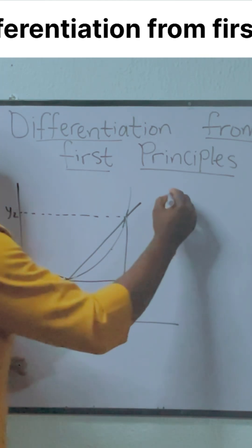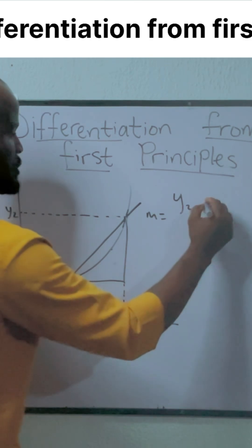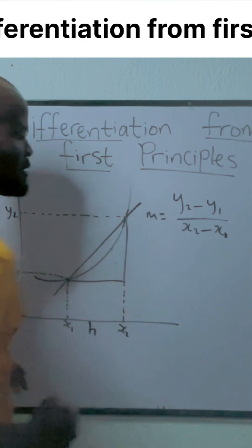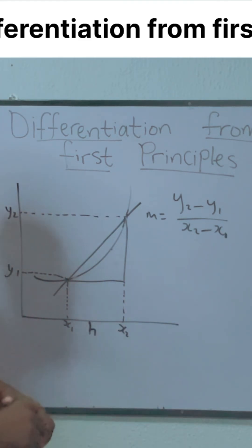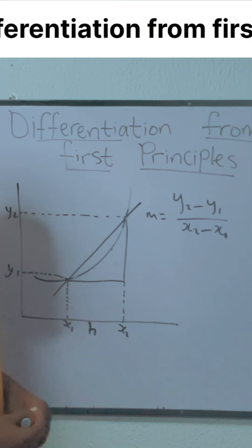Now we know that the slope of this graph is m equals (y2 - y1) over (x2 - x1). But we already know that there is a formula and that formula is what eventually is going to lead us to first principles. We're going to make this formula for the slope look like that formula that is more applicable to differentiation from first principles.